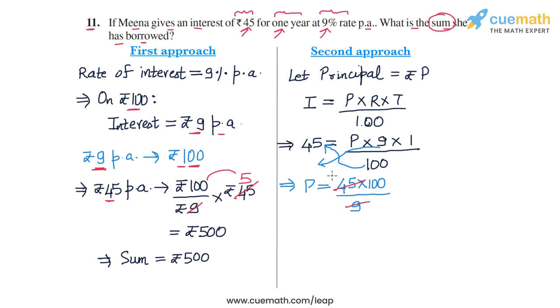45 by 9 is 5, and 5 into 100 is 500. So we get the value of P as 500. Once again, we conclude from here that the sum, the principal amount that Meena has borrowed, is rupees 500.